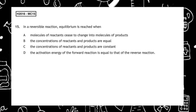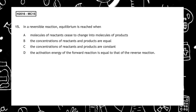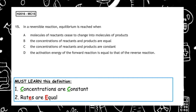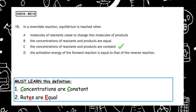This past paper question is from the Higher 2016, multiple choice 15. In a reversible reaction, equilibrium is reached when — remember our definition — concentrations are constant or rates are equal. And the correct answer to this is multiple choice answer C: the concentrations of reactants and products are constant.